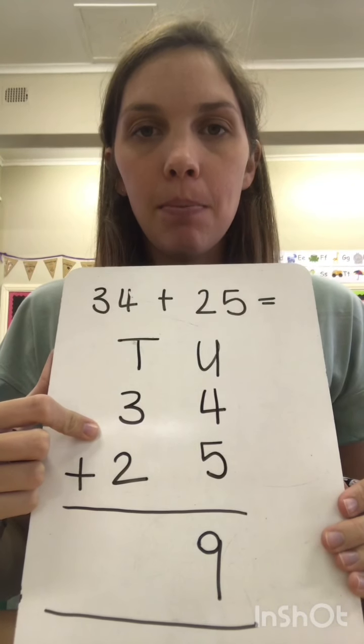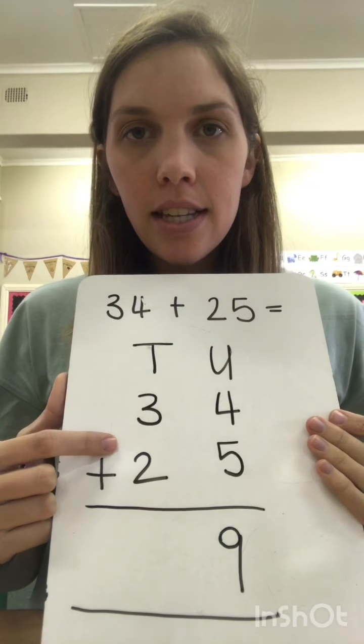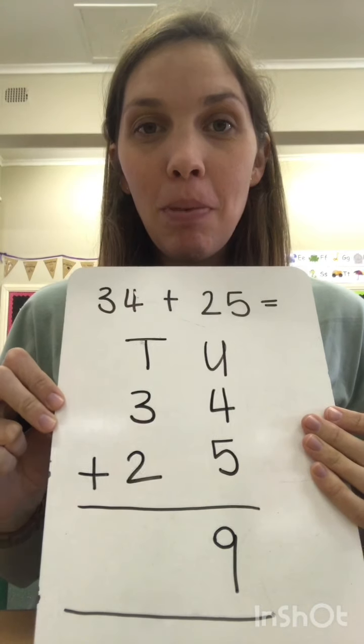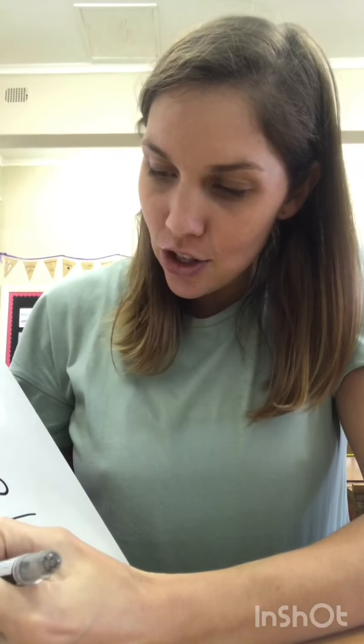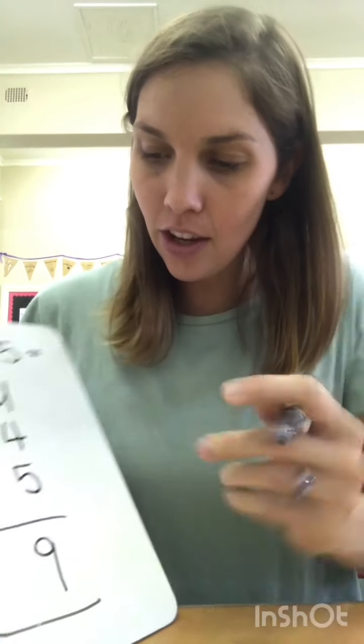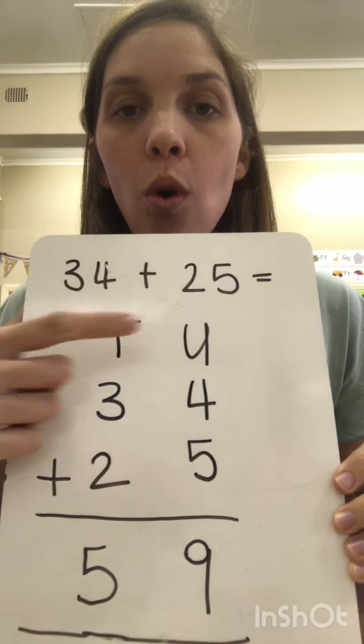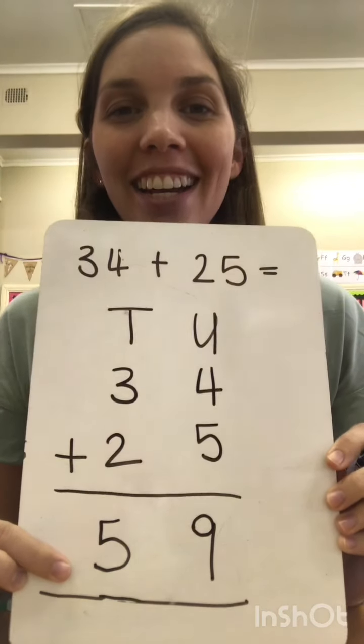To the tens column. So let's have a look, ignore everything else, all we're looking at is the tens column and we've got 3 plus 2. What's 3 plus 2? That's right, 5. So there you go. So now we know that 34 plus 25 when I lay it out like this is equal to 59. Easy peasy, hey?